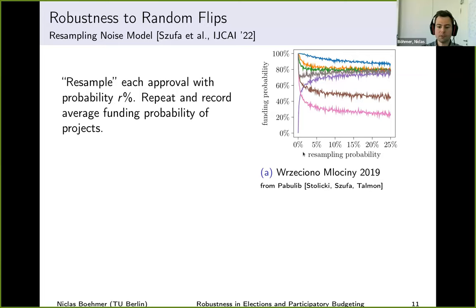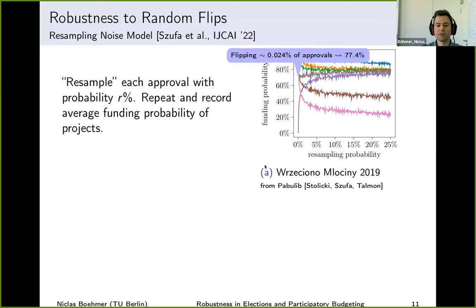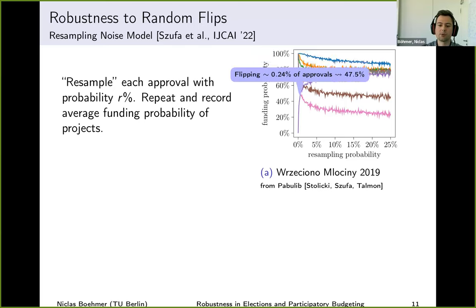Each line now corresponds to one project. Moving right introduces more noise. Already quite remarkable: if we roughly flip around 0.024 of all approvals, the funding probability of the pink project drops to only 77.4%. If we flip 10 times that — 0.24 of all approvals — the pink project actually does not get funded in the majority of cases. In situations like this, one could claim that this project was more funded by luck or accident than by true merit.